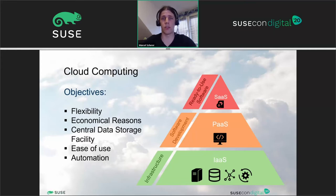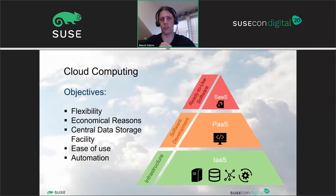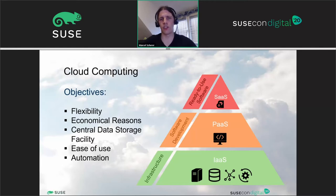Anything that runs in the cloud and not on your PC — even Netflix is just a cloud solution, software as a service. The objectives for cloud are mainly flexibility and saving money for economical reasons. By having this flexibility you can scale on demand: if you need more system resources you just add them, and if you don't need them any longer you give them away. There are also central storage facilities and automation, making the whole platform easier to use.